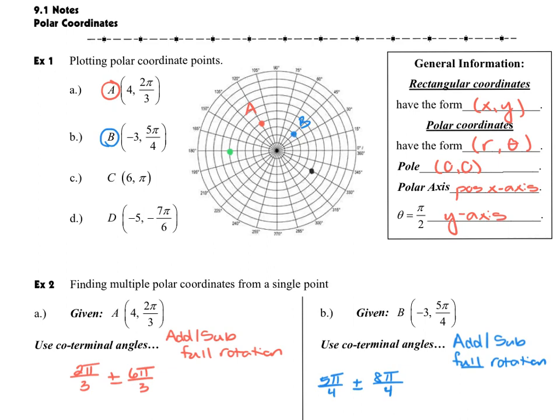C is going to be my green point right here. And C, I counted six in the positive direction, one, two, three, four, five, six.